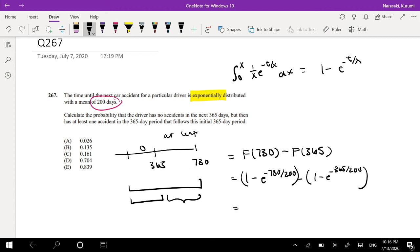Okay, so this is also equal to 1 minus 1. This just cancels out. So it's equal to negative e to the negative 730 over 200, plus e to the negative 365 over 200.